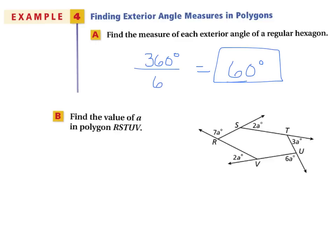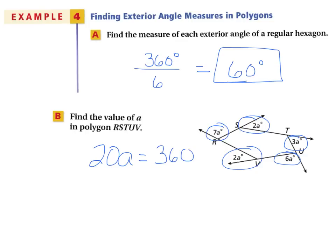In Example 4b, find the value of A in polygon RSTUV. We have five angles. Adding them all up gives 20A. We know they must sum to 360°, so 20A = 360, and A = 18.